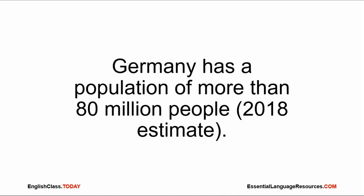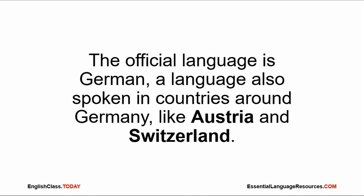Germany has a population of more than 18 million people (2018 estimate). The official language is German, a language also spoken in countries around Germany, like Austria and Switzerland.